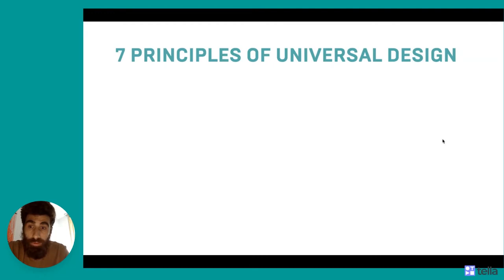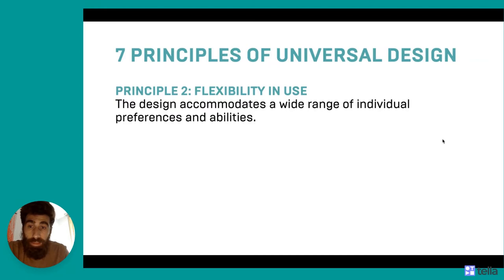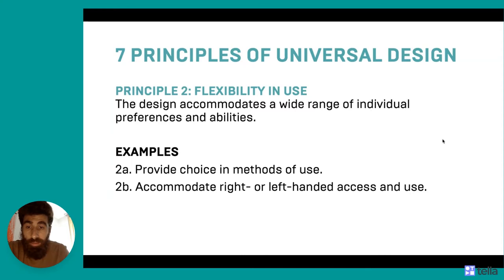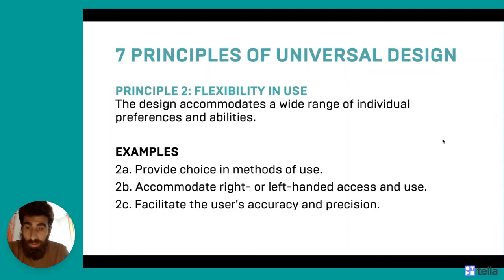The second principle is flexibility in use. The design accommodates a wide range of individual preferences and abilities. Examples include: provide choice in methods of use, accommodate right or left-handed access and use, facilitate the user's accuracy and precision, and provide adaptability to the user's pace.